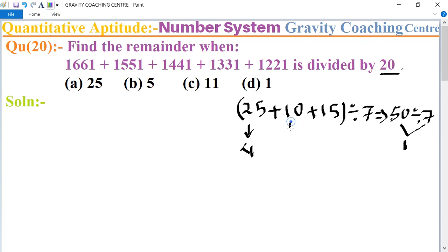And 10 divided by 7, so remainder is 3. And 15 divided by 7, remainder is 1. Now add all the numbers: 4 plus 3 plus 1 equals 8. So 8 divided by 7 also gives us remainder 1.